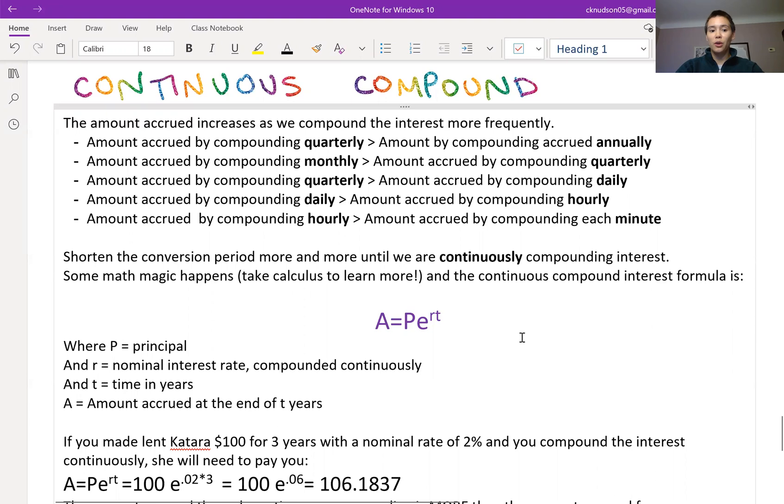So the amount that you accrue after t years where you've invested p dollars as your principal and the nominal interest rate is r, we can say that the amount accrued is A equals P e to the rt. And this letter e is a never-ending decimal, it's about 2.7. You can look it up on the internet or your calculator if you want to see more decimal places there.